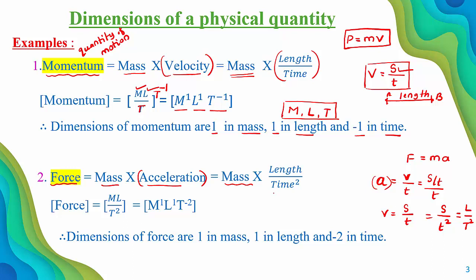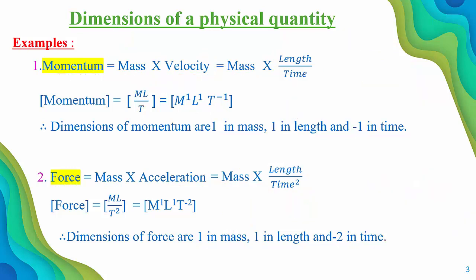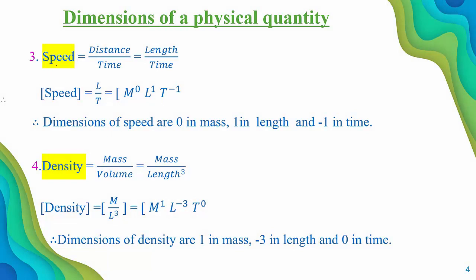Writing in terms of fundamental units: mass is M, length is L, and time squared in the denominator becomes T⁻². So the final dimension of force is M¹L¹T⁻². The dimensions of force are 1 in mass, 1 in length, and −2 in time.